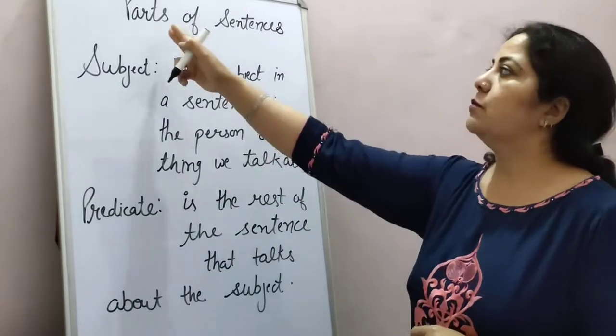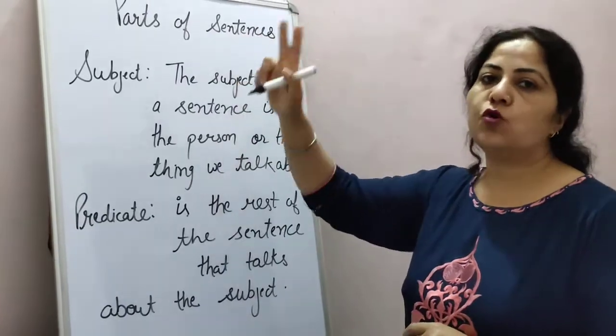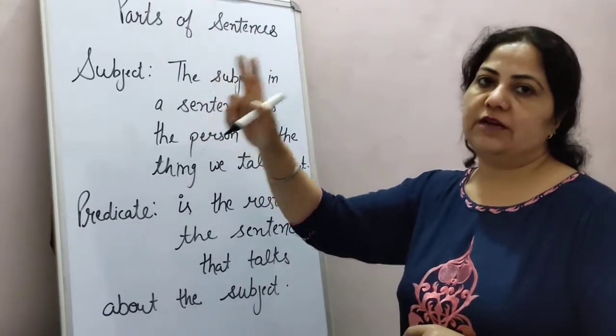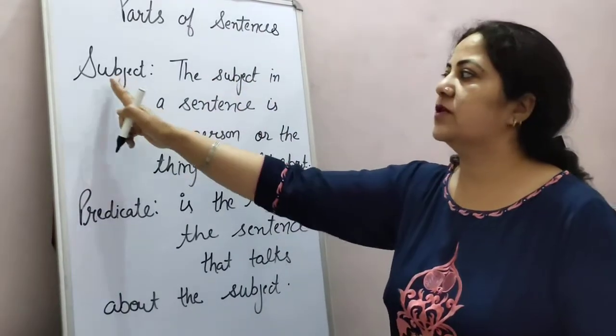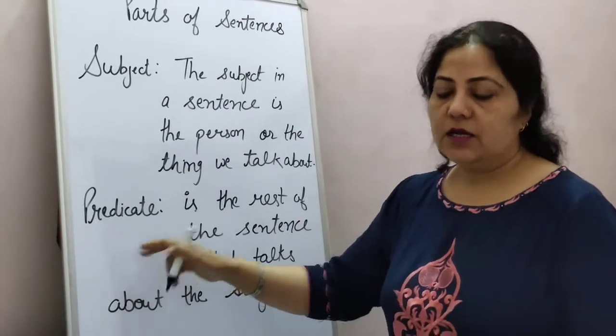So, parts of sentences — there are two parts of each and every sentence. First is subject and second is predicate.